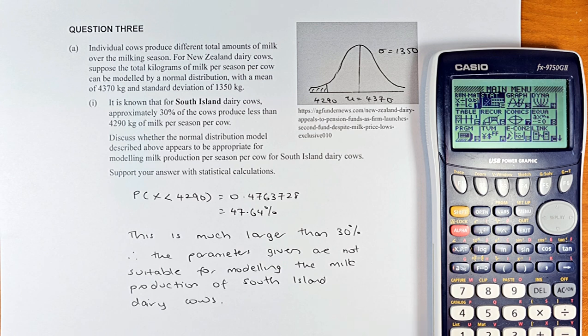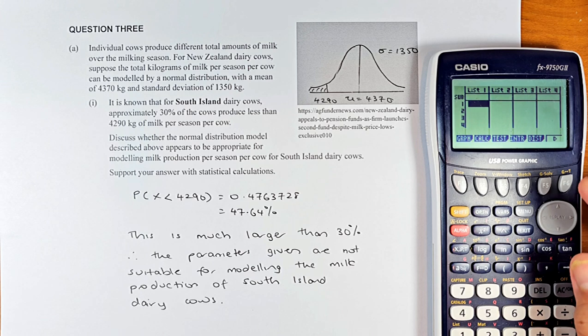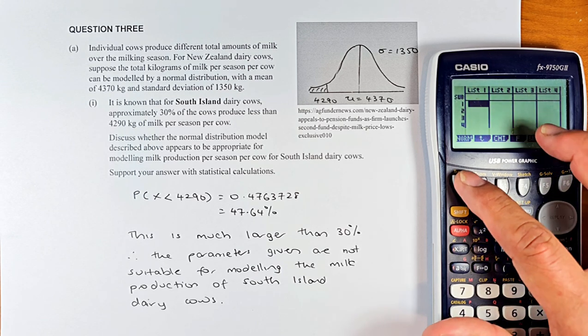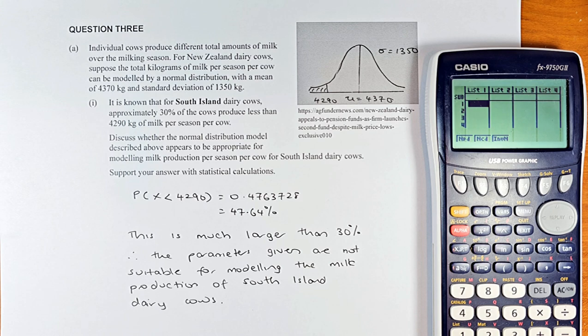So we are going to calculate the area there and see whether it is more or less than 30%. So we are going to statistics, execute and of course we are going to do normal. So distribution, F5 distribution and normal. If you have not watched my video, normal is always NCD because it is a continuous distribution.